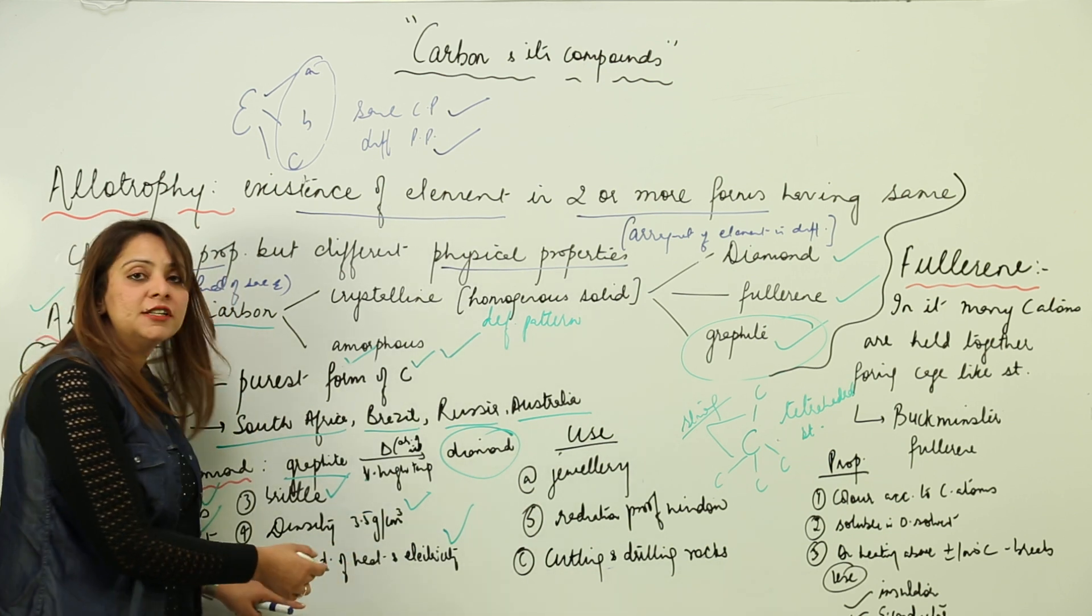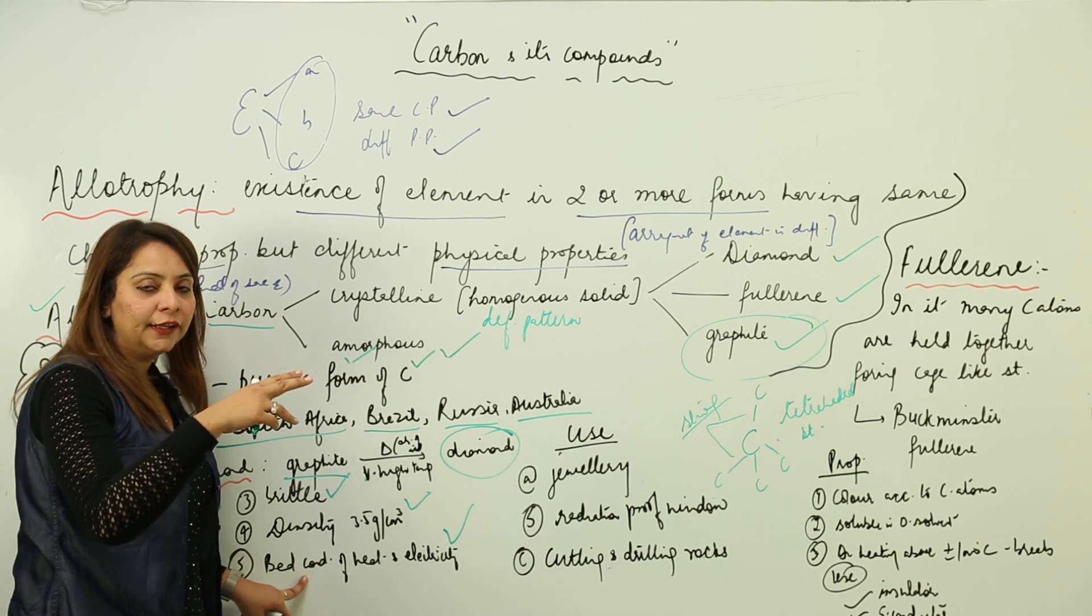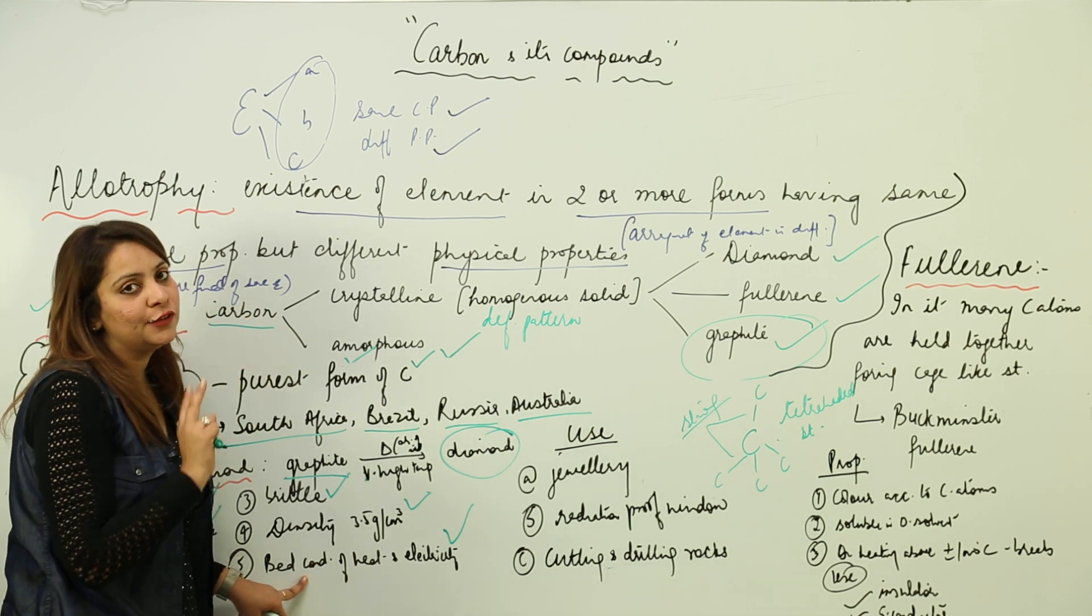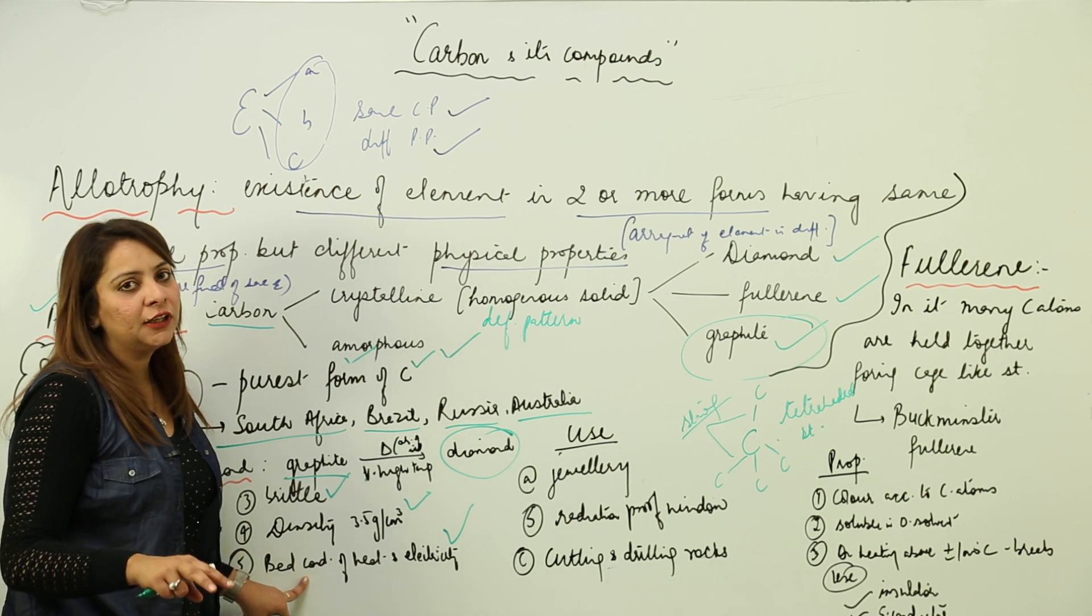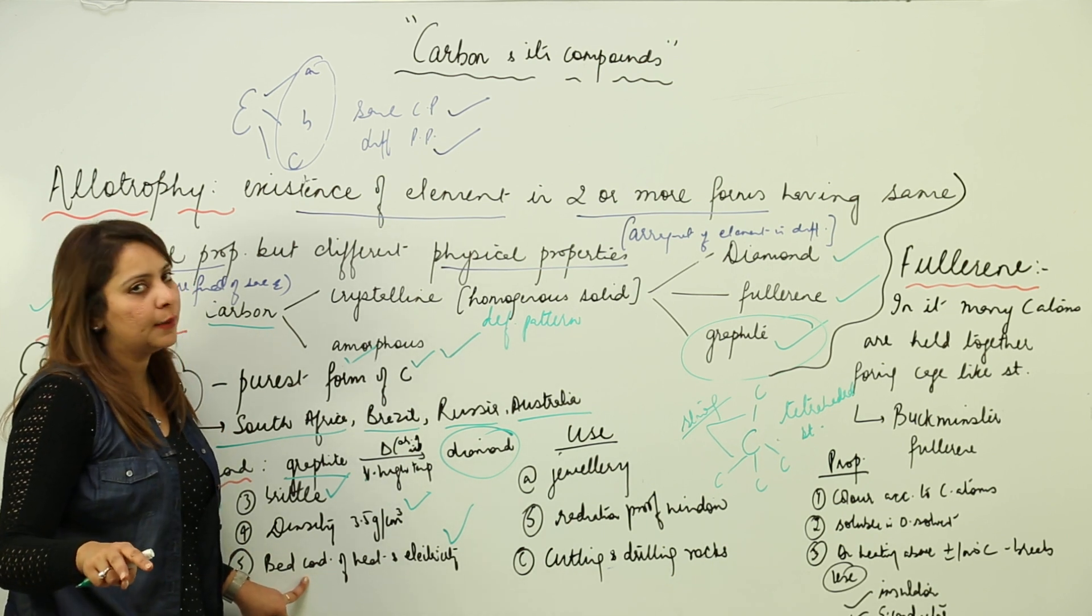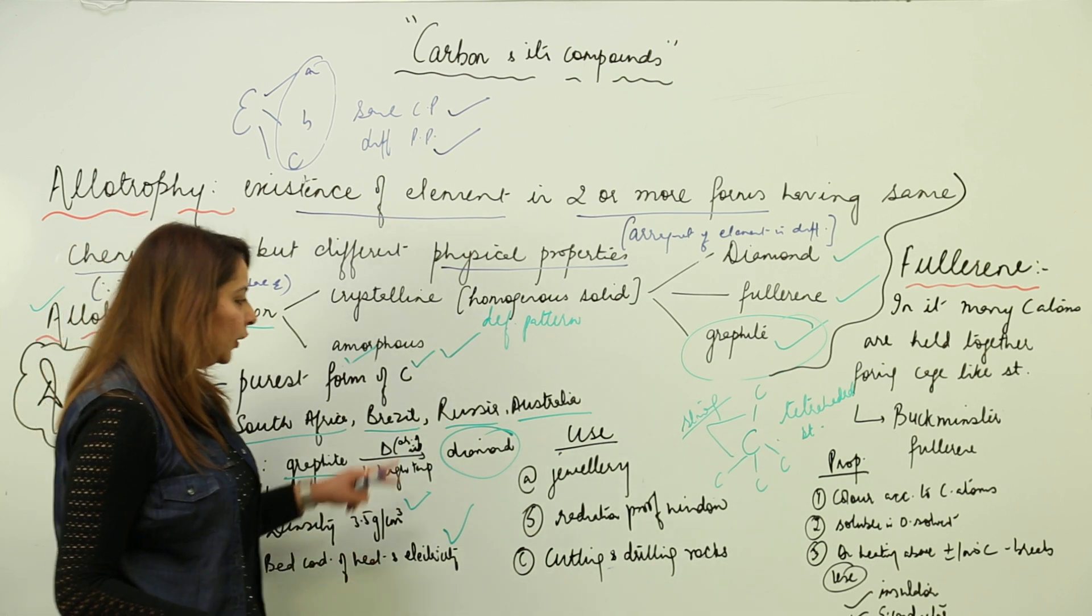The reason it is a bad conductor is because there are no such free electrons, but graphite was a good conductor. So you can see they differ in physical properties. Allotropes have same chemical properties but different physical properties due to difference in the arrangement.